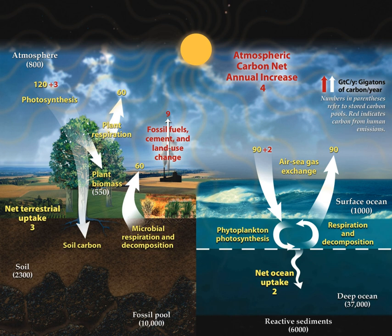The geologic component of the carbon cycle operates slowly in comparison to the other parts of the global carbon cycle. It is one of the most important determinants of the amount of carbon in the atmosphere, and thus of global temperatures. Most of the Earth's carbon is stored inertly in the Earth's lithosphere. Much of the carbon stored in the Earth's mantle was stored there when the Earth formed. Some of it was deposited in the form of organic carbon from the biosphere. Of the carbon stored in the geosphere, about 80% is limestone and its derivatives, which form from the sedimentation of calcium carbonate stored in the shells of marine organisms. The remaining 20% is stored as kerogens formed through the sedimentation and burial of terrestrial organisms under high heat and pressure.